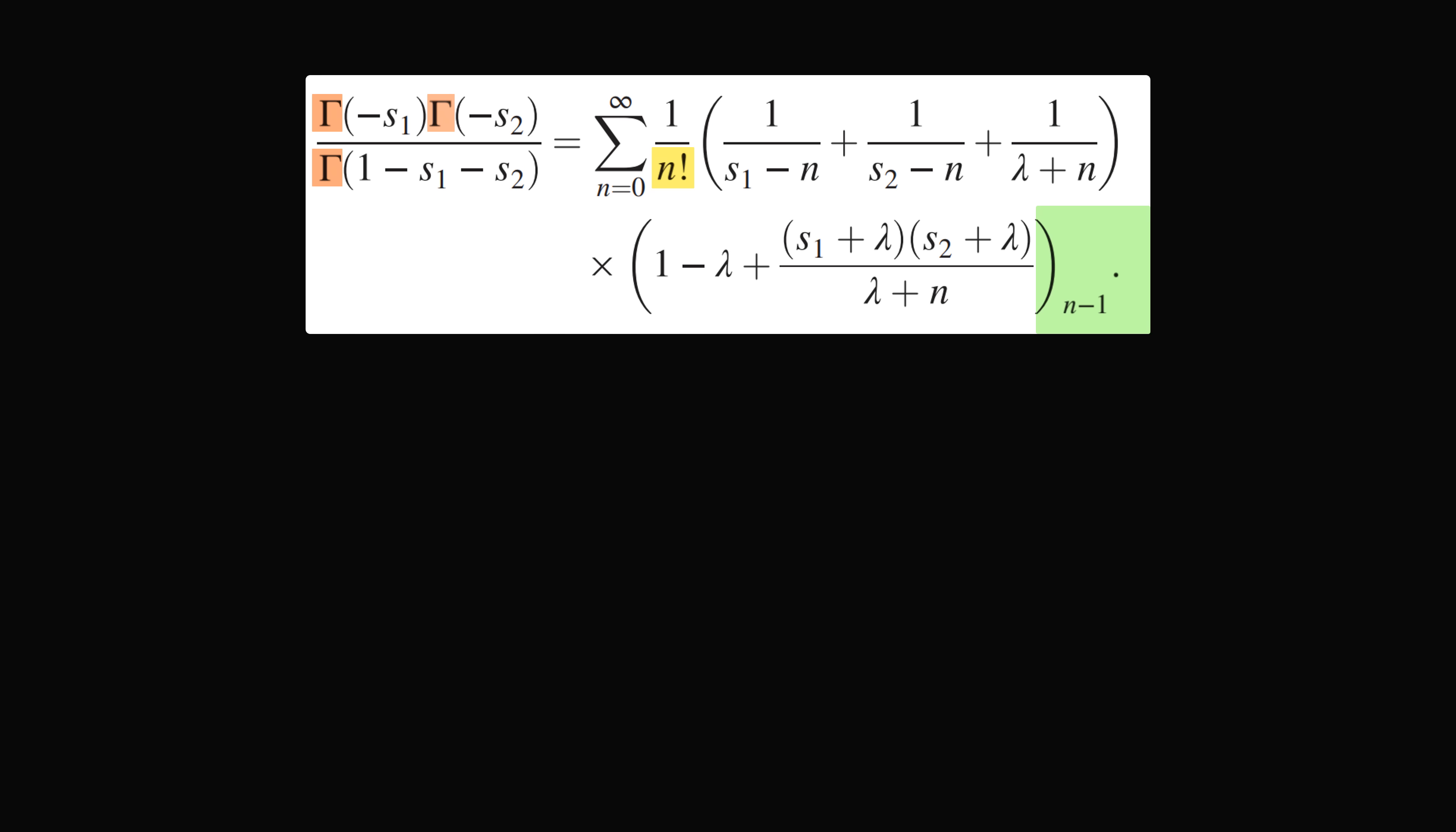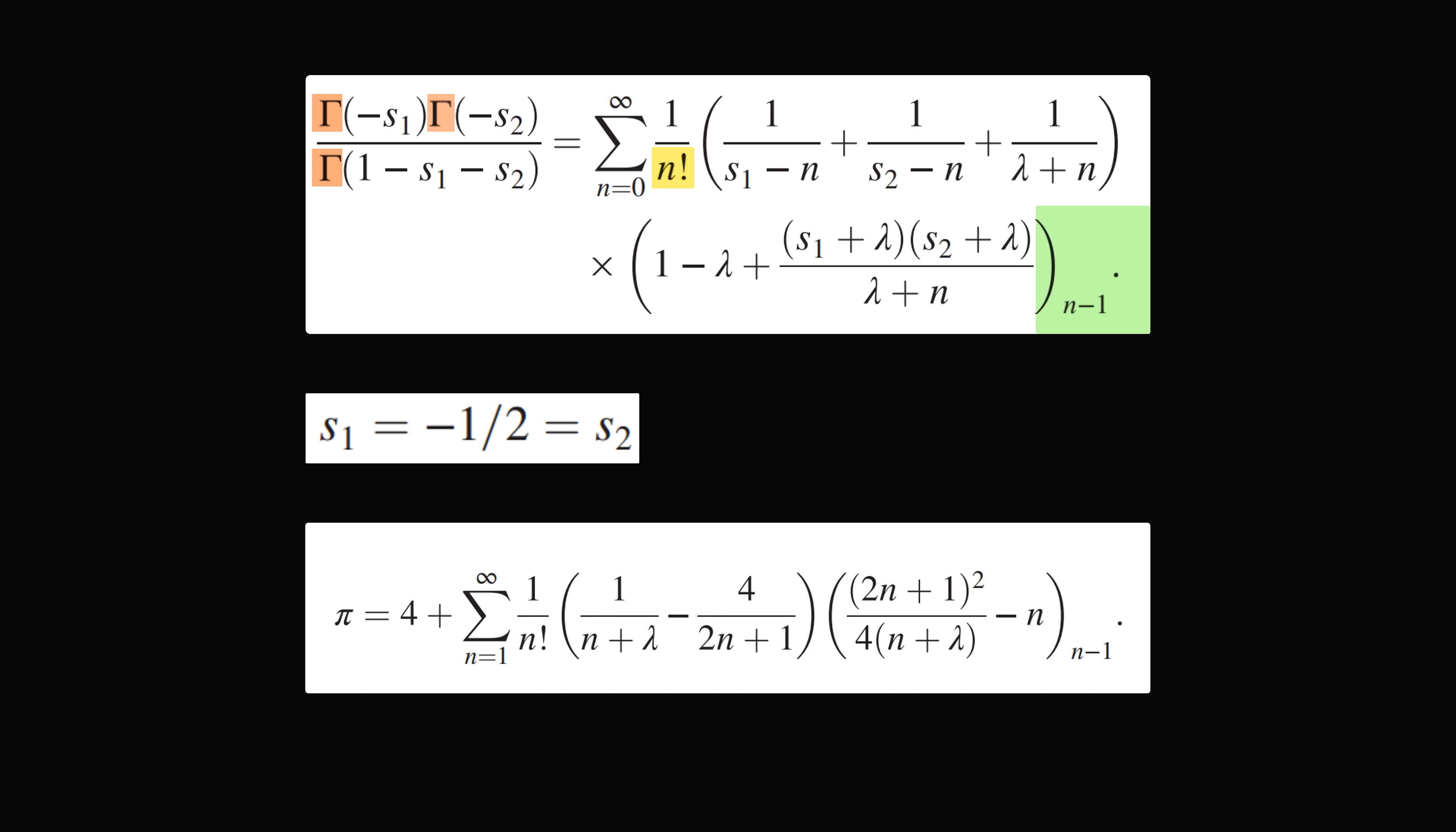So now we're ready to go from this formula to the formula for pi. If we substitute s1 is equal to s2 is equal to minus 1/2, and then carefully simplify, we end up that pi is equal to the following.